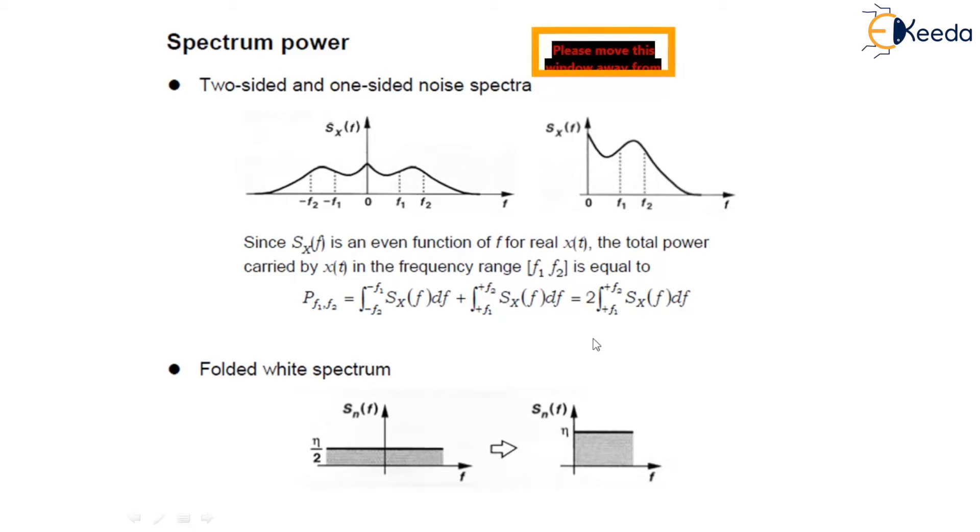In fact, the integral in this equation is the quantity measured by a power meter sensing the output of a bandpass filter between F1 and F2. This negative part is folded around the vertical axis and added to the positive frequency part. We call this representation the two-sided spectrum and this spectrum as one-sided spectrum. The two-sided white spectrum can have a one-sided counterpart as shown over here in this folded white spectrum.